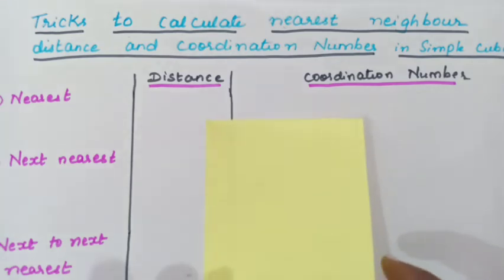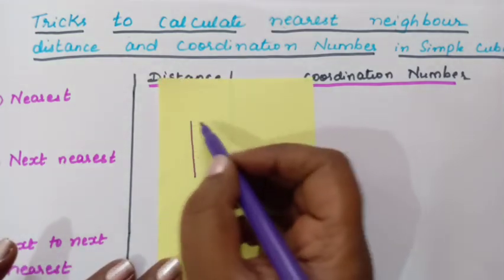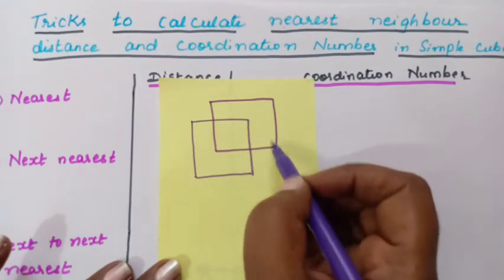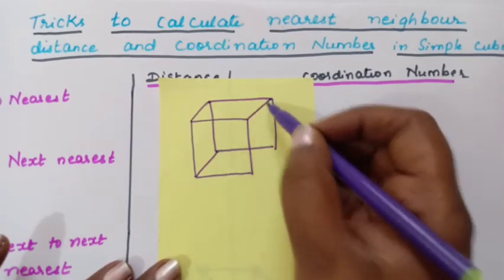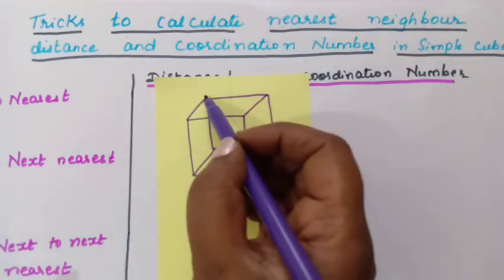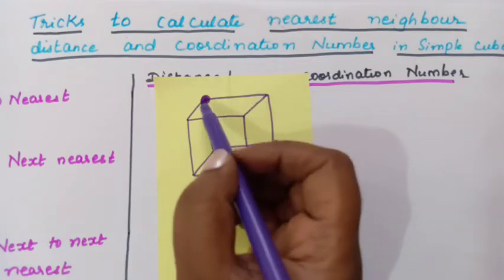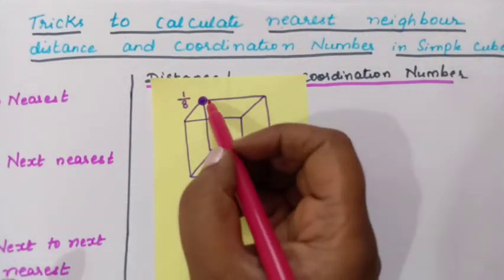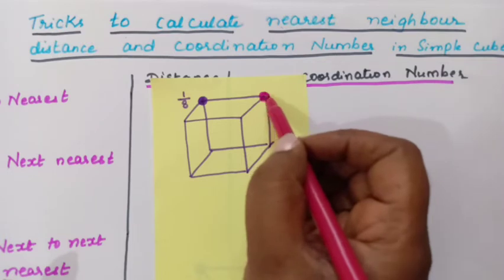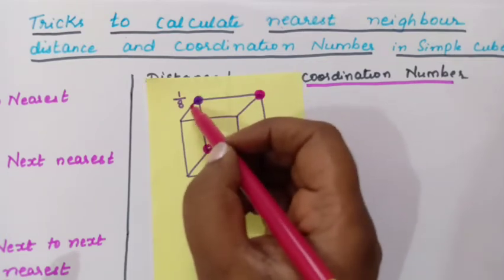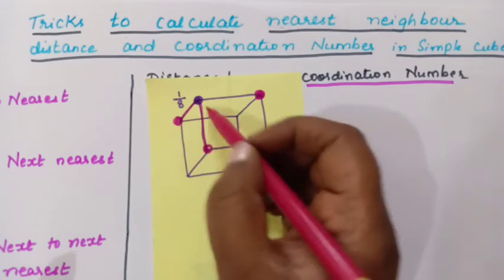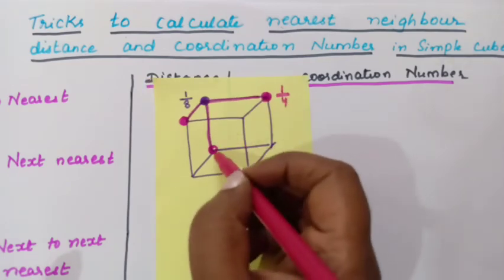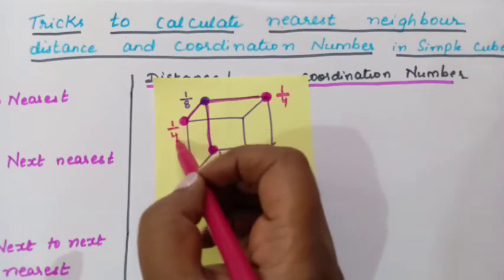So first let us draw a simple cube. This is a simple cube. Consider one atom in the corner — this is the atom which is present in the corner. You know that a corner atom's contribution will be 1/8. So now this corner atom is in touch with the atom which is on the edge. This is the first, second, and third edge atom. The contribution of these atoms will be 1/4.